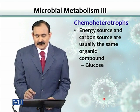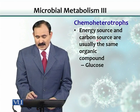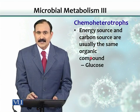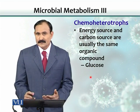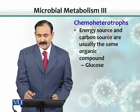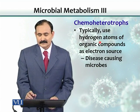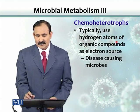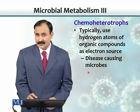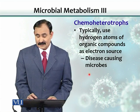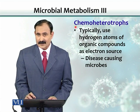The major group is chemo-heterotrophs, where both the energy source and carbon source are typically the same organic compound — for example, glucose can be used as both an electron source and a carbon source. They use hydrogen atoms of organic compounds as electron sources, and these are the disease-causing organisms.